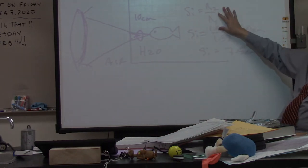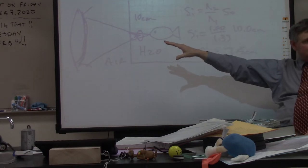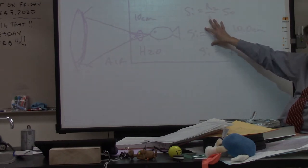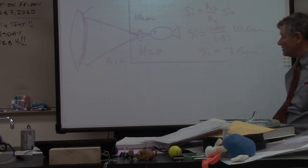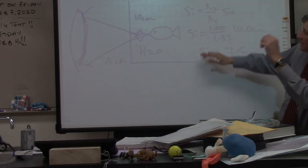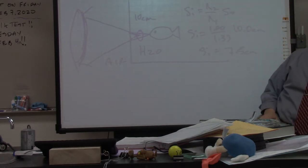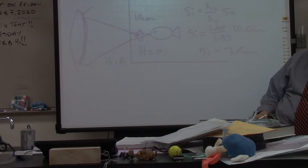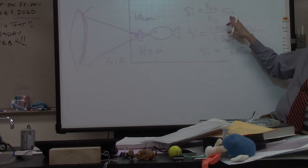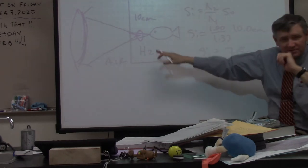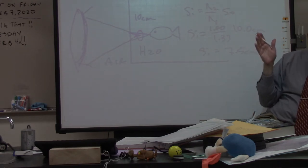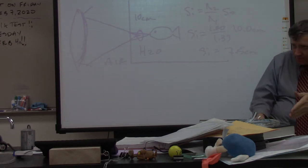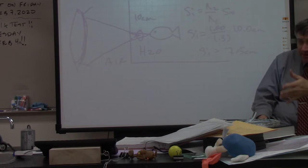Now, this isn't on your equation sheet - I will give you this equation on the test. You just have to know how to use it. So what this tells you, and the whole key to this, is that you have to realize which direction the light is going. S-knot is the object distance - how far the fish is actually behind the barrier that you're looking at. So the fish is actually 10 centimeters deep.